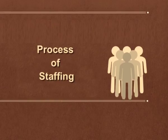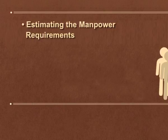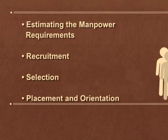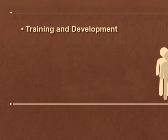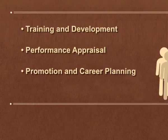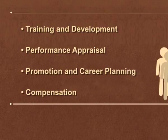Now let us see the process of staffing. The stages in the process of staffing are: first, estimating manpower requirement; second, recruitment; third, selection; fourth, placement and orientation; fifth, training and development; sixth, performance appraisal; seventh, promotion and career planning; and eighth, compensation.